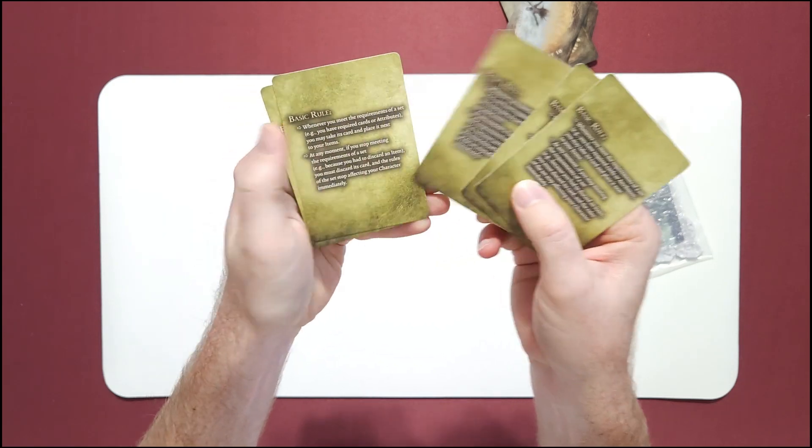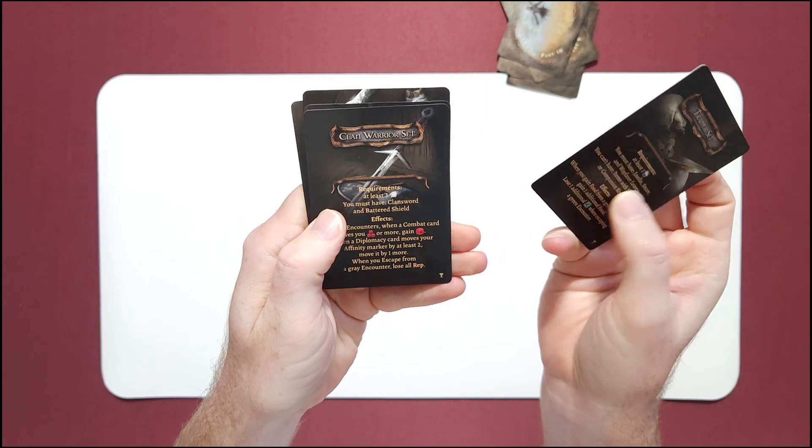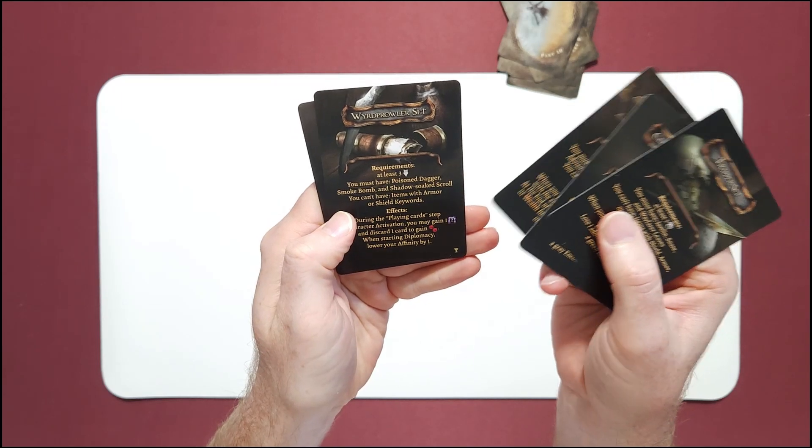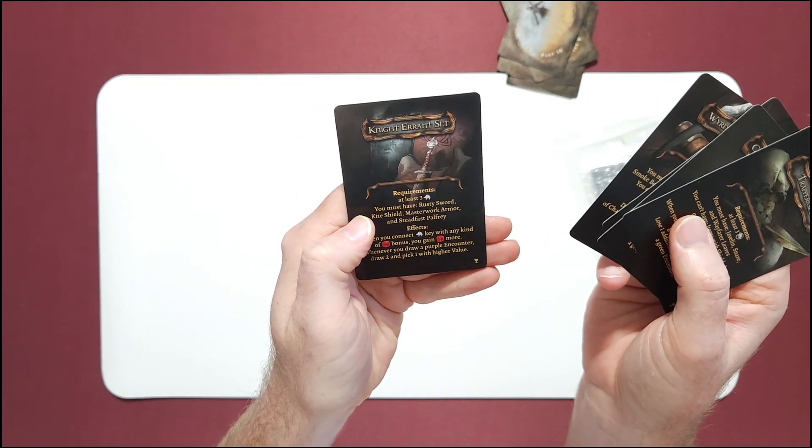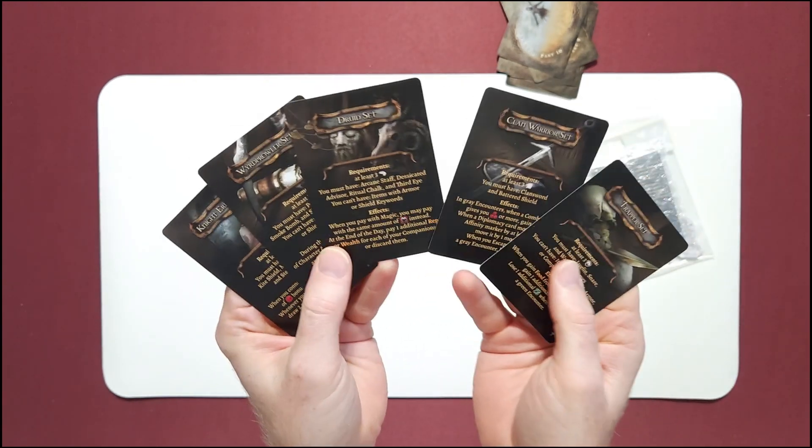These are basic rules whenever you meet. Okay. So Trapper set, Craft Warrior set, Druid set, Weird Prowler set, and Knight Inerrant set. I don't know what this means.